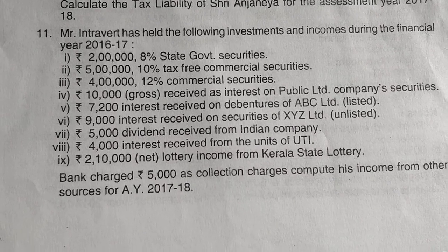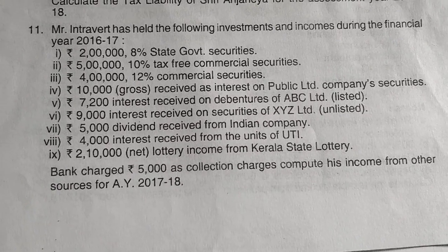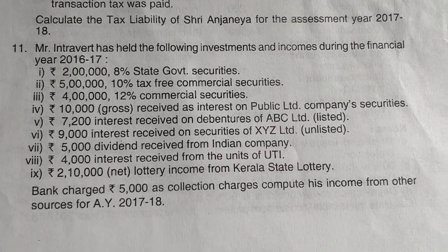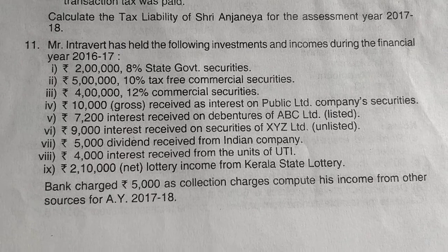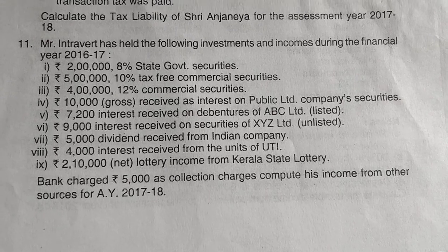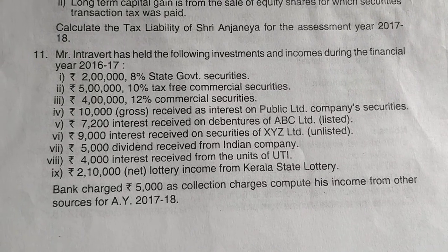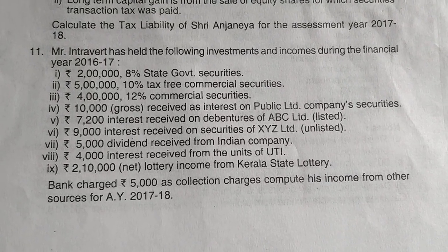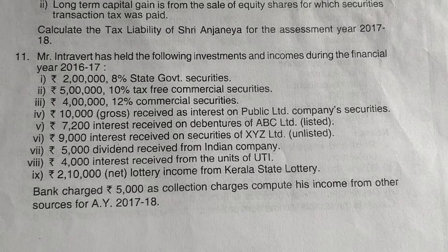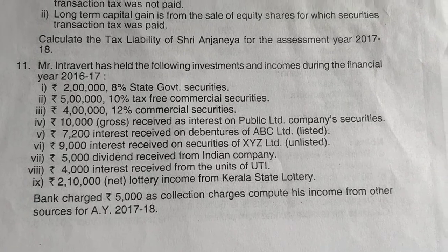The investments are: 2 lakhs, 8% state government securities; 5,10,000 tax-free commercial securities; 4,12,000 commercial securities; 10,000 gross received as interest on public limited company securities; 7,200 interest received on debentures of ABC Limited; 9,000 interest received on securities of XYZ Limited; rupees 5,000 dividend received from Indian company; 4,000 interest received from UTI; and 2,10,000 net lottery income of Kerala state lotteries. Bank charges 5,000 as collection charges. Compute his income from other sources for the assessment year 19-20.